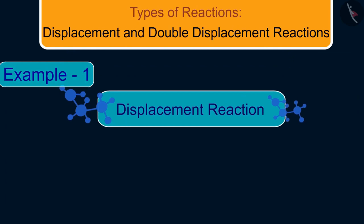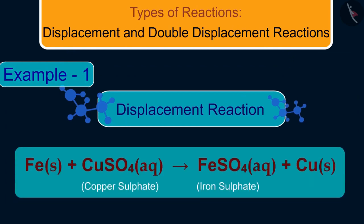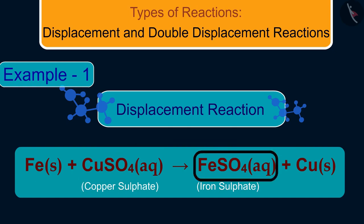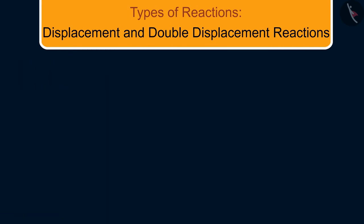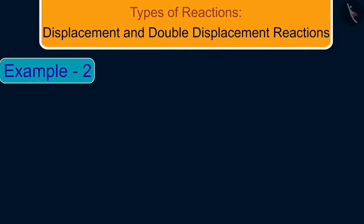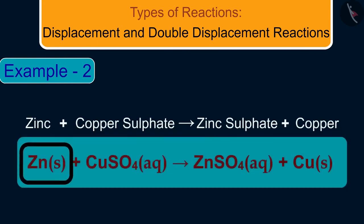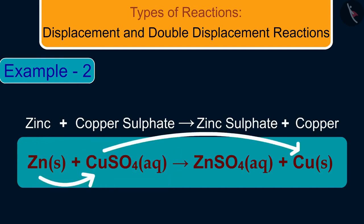The reaction that took place was: iron reacted with copper sulfate solution. As iron is more reactive than copper, it displaced the copper from copper sulfate and formed iron sulfate and copper. This reaction is known as a displacement reaction.